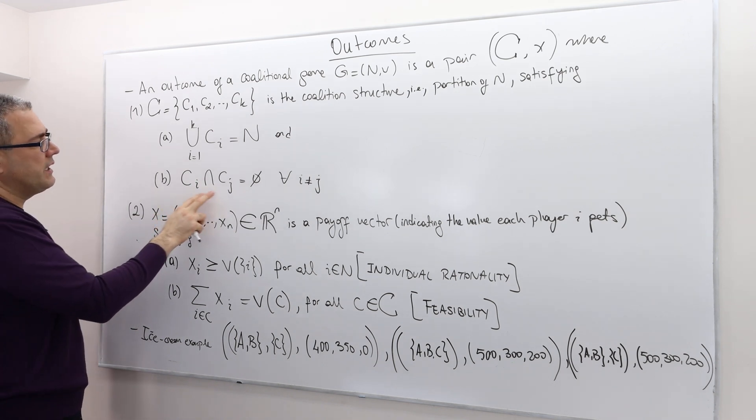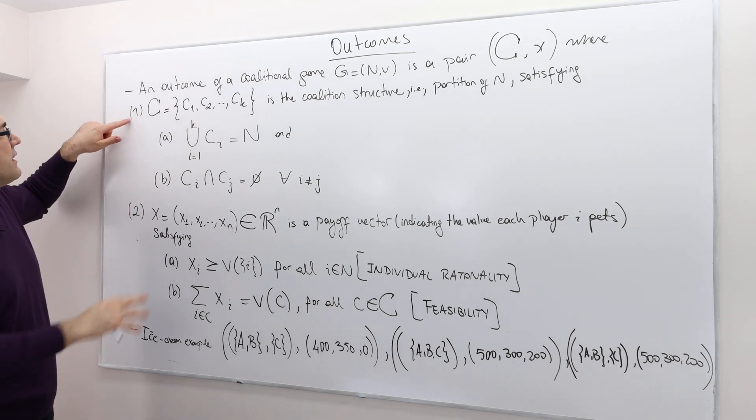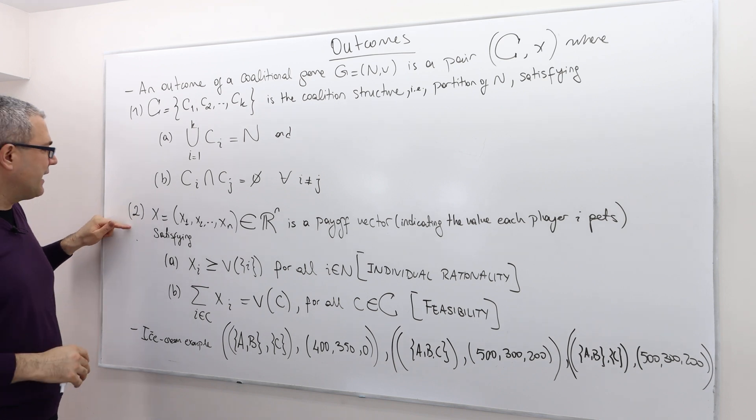Well, so Ci intersection Cj is empty for any I and J. Well, the second is, this is what C is. Well, what about this X? What is this X?